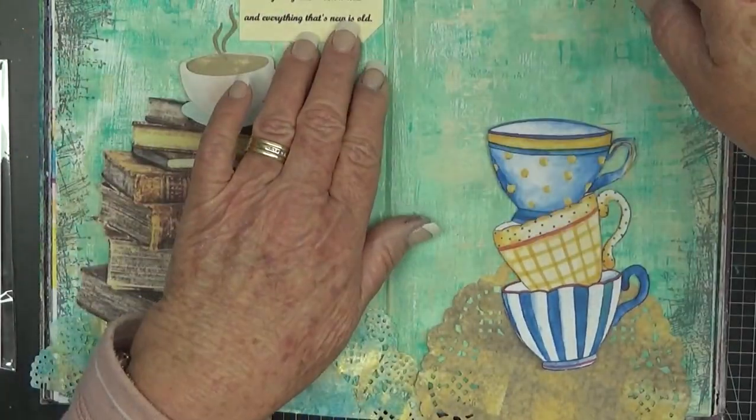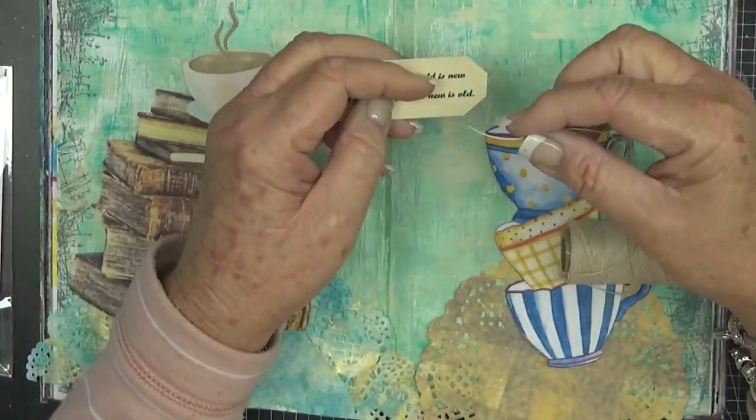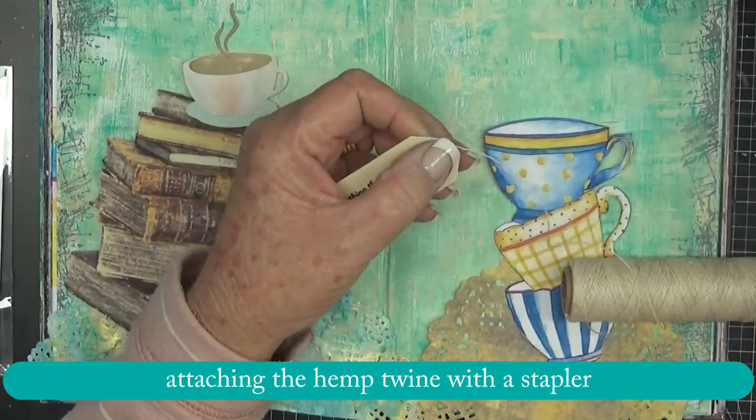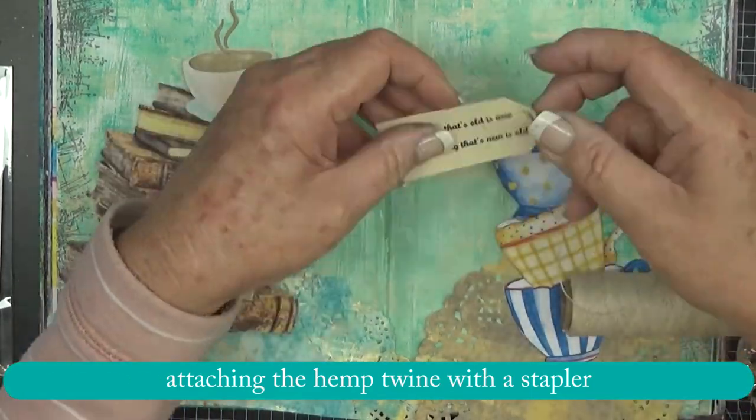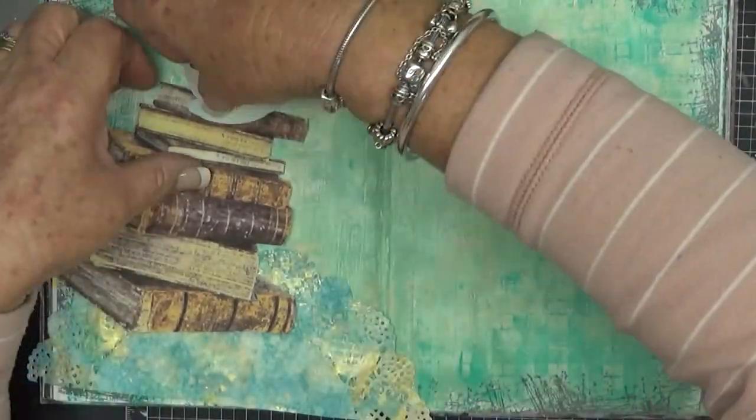And I'm just working out how I'm going to position these on the page. Just attaching some hemp twine with a stapler. I could not find my mini attacher anywhere. I'll have to go searching for it.